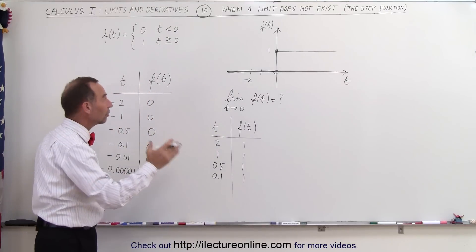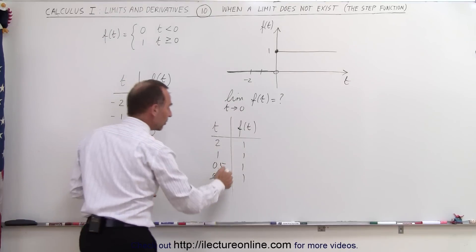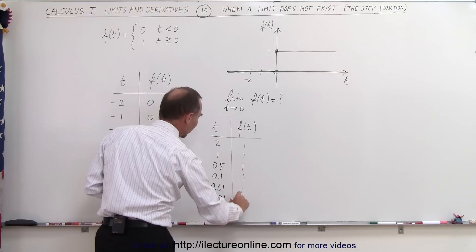0.01, 1; 0.001, 1, and so forth. So it appears that as we approach t from the positive direction, from a number greater than 0 and towards 0, we get the limit to be 1.